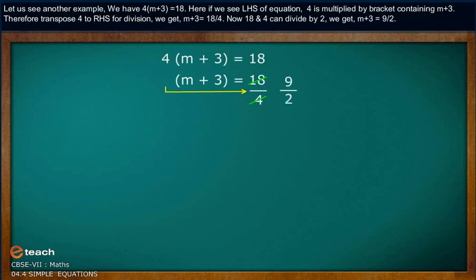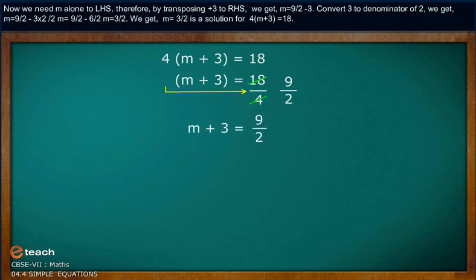Now, 18 and 4 can be divided by 2. We get m plus 3 equals 9 by 2. Now we need m alone on the left-hand side. Therefore, by transposing plus 3 to the right-hand side, we get m equals 9 by 2 minus 3.